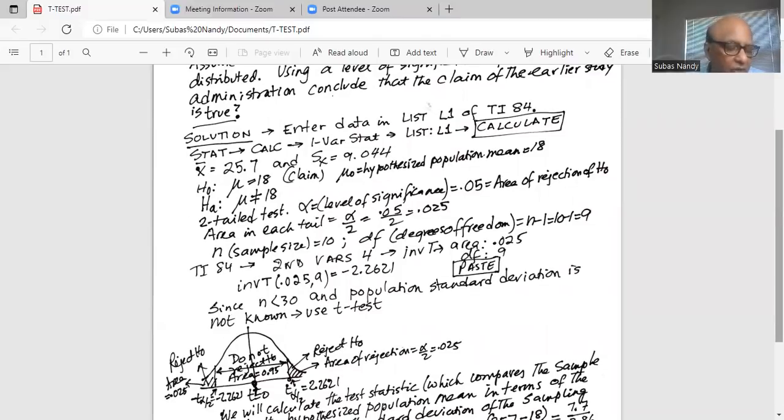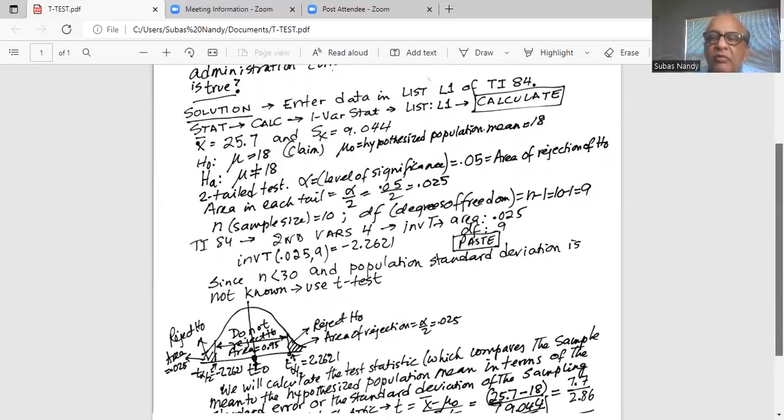Now we need to find out the critical values of t, t alpha by 2 and minus t alpha by 2. We can go to our TI-84 calculator and do second, press the second button, then vars, which is in the third row, and I go to number 4 invT. My area in each tail is 0.025. My degrees of freedom is sample size minus 1, 10 minus 1. Always one degree of freedom is lost because we use that one degree of freedom to calculate the sample mean. So degrees of freedom is 9 and I go to paste and hit enter.